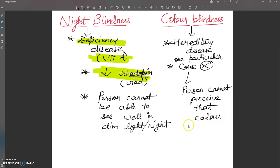For example, absence of red cones means a person cannot distinguish between red and yellow. If the red cone is absent, then what happens is there is difficulty in differentiation of red color.